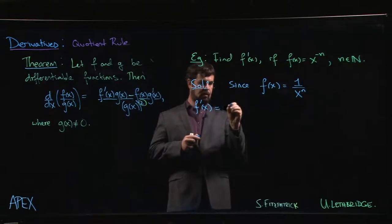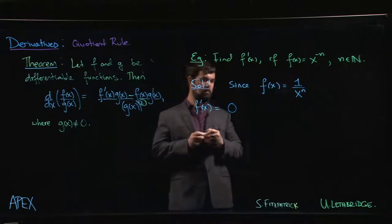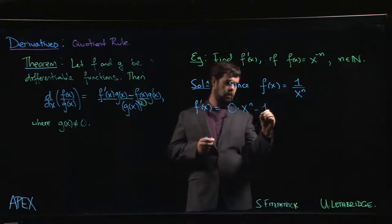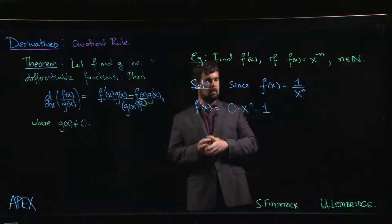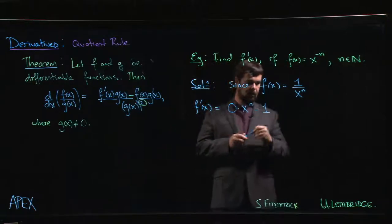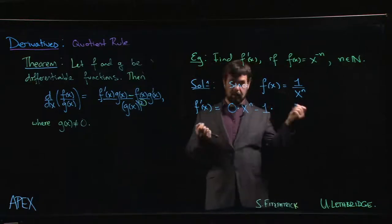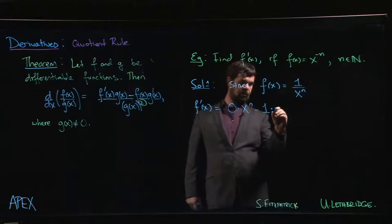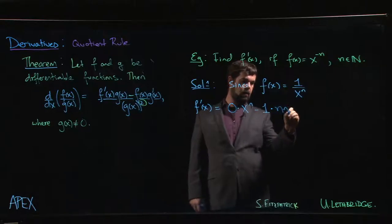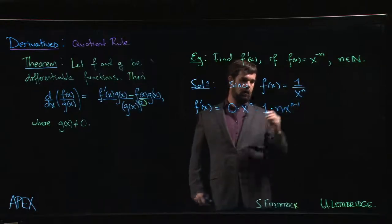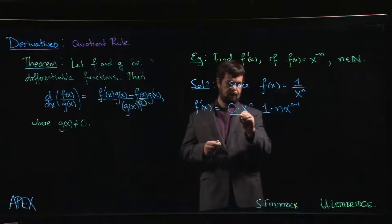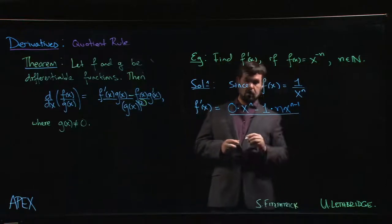...which is 0, multiplied by the bottom, minus the top, 1, multiplied by the derivative of the bottom. And because now that this is in the bottom, n is a positive integer, this is the power rule that we've already established. So we know that this is n times x to the n minus 1, and we divide by the bottom squared.